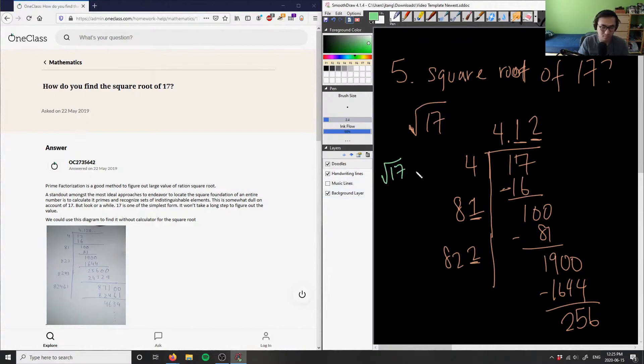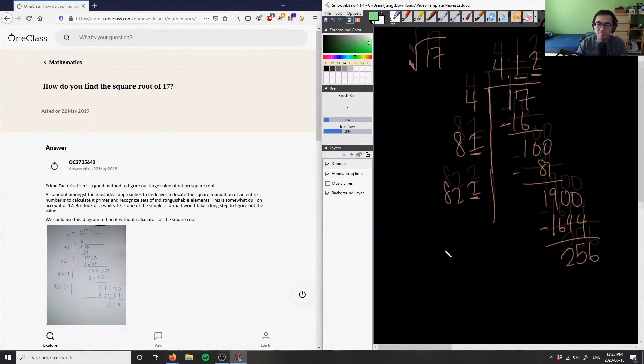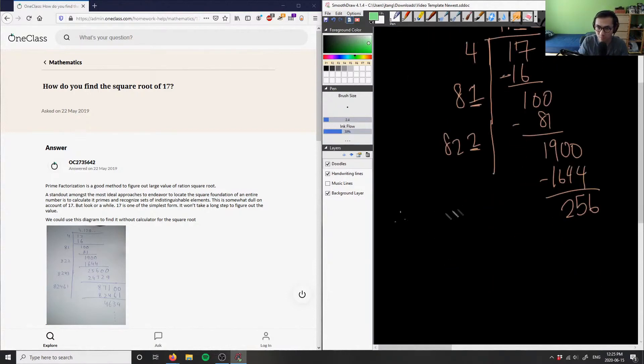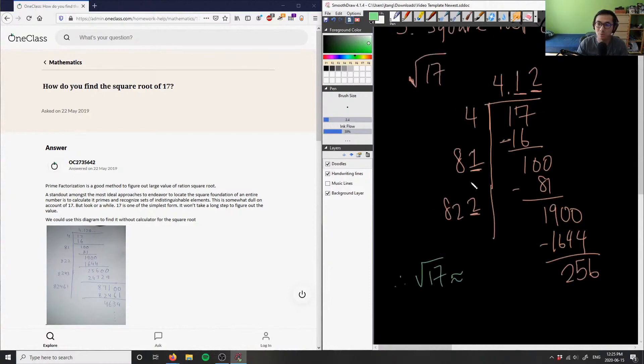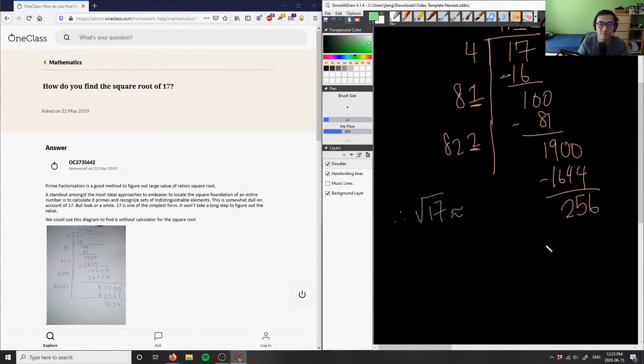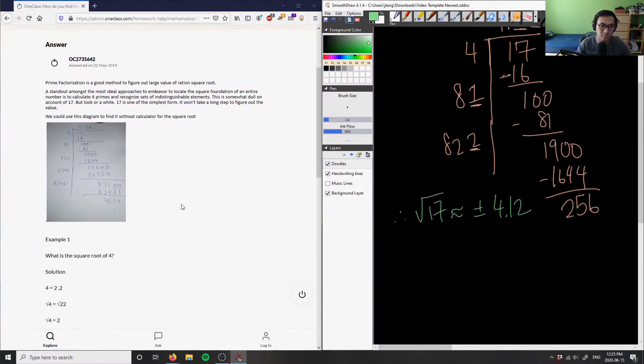I can say the square root of 17 is approximately equal to plus or minus 4.12. Not 7.1, 4.12 here. And this is our solution for this problem.